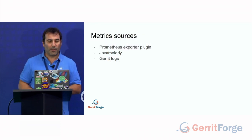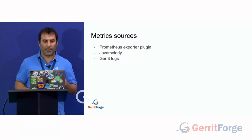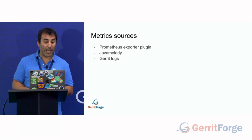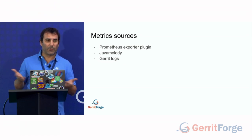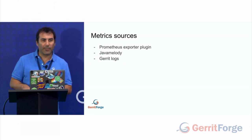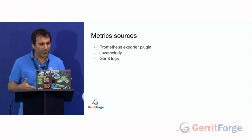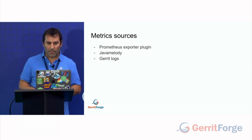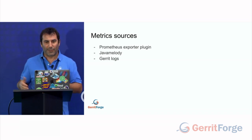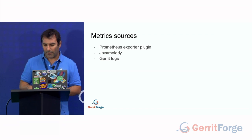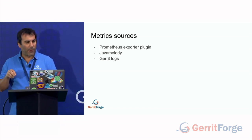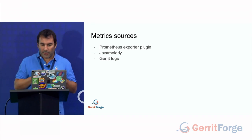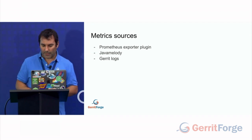Where can we gather metrics from in Garrett? Well, we have the Prometheus exporter plugin, we have Java Melody, but we also have Garrett logs. Garrett logs are really, really rich with information — sometimes really under-evaluated, but really, really important. The dashboards I'm going to show you are coming from Garrett logs, so you don't need to install any plugin to gather these particular metrics.